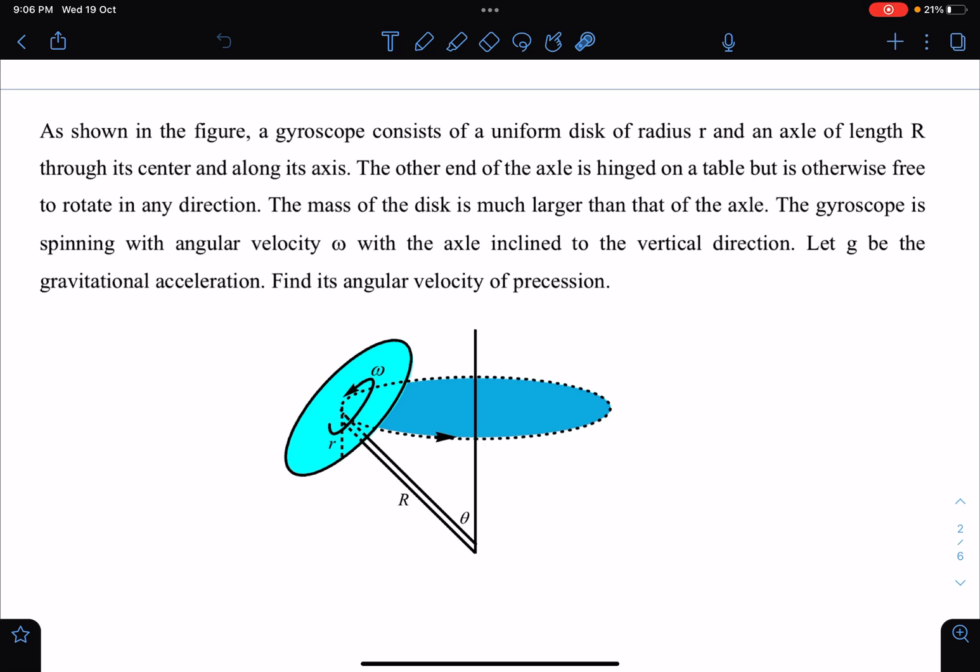The other end of the axle is hinged on a table but is otherwise free to rotate in any direction. When they say free to rotate in any direction, this can rotate like this, where the center of the disc is following this circle. Otherwise, in general, it can wobble like this. So luckily here it is moving in a stable orbit.